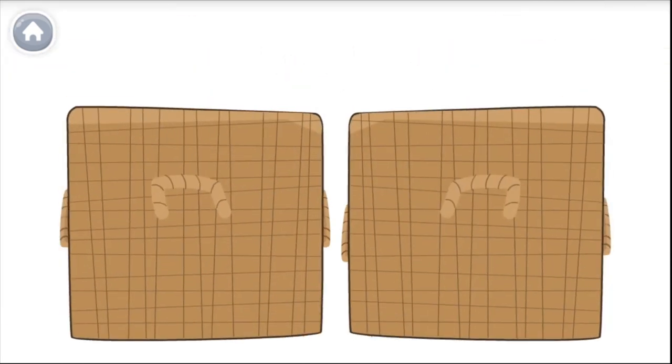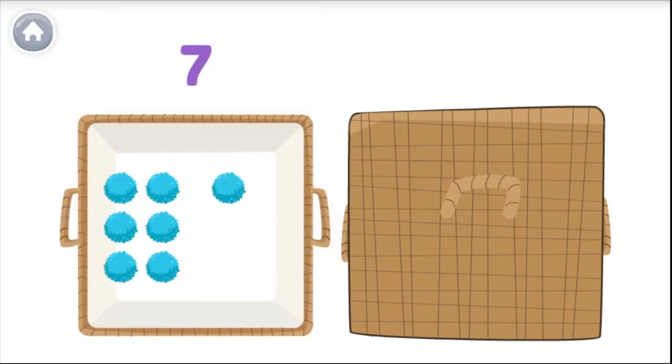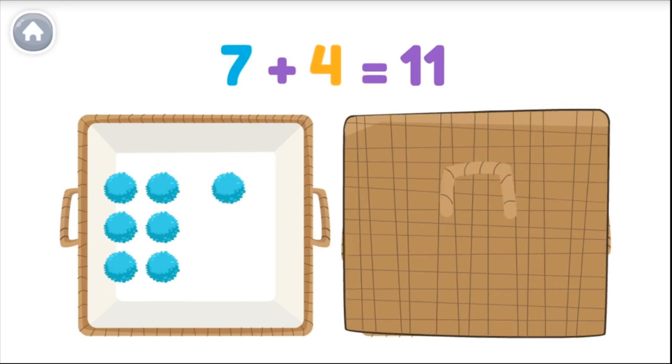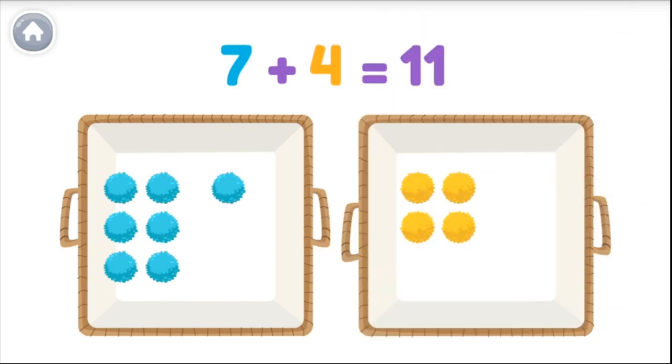Let's try something else. Now there are seven pom-poms in this container, and I don't know how many there are in this container. But I do know there are eleven total. Seven plus what equals eleven? Hmm. Seven plus four equals eleven. Let's check by counting.